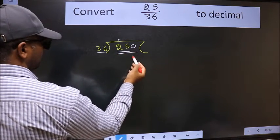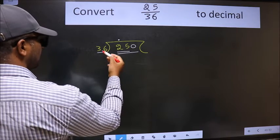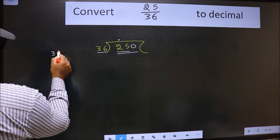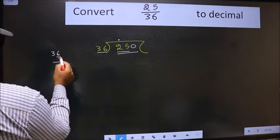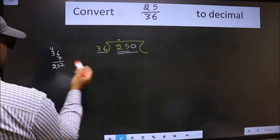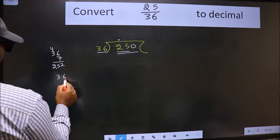So 250. Our number close to 250 in 36 table is, let us check with 7. 7, 6, 42. We got 252. This is exceeding this. So we should take 6.